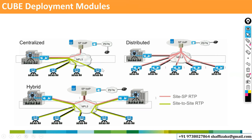For example, consider Bangalore as headquarters and Chennai as branch. Whenever a call is made from Chennai, it connects to Bangalore — Bangalore has a CUBE router — and from there it connects to the provider. Chennai has no direct connection to the provider. This is called centralized deployment. Calls always go to the central office first; if a call comes from the provider it comes to Bangalore, then Bangalore connects to the branch office. The link from branch to central uses MPLS.